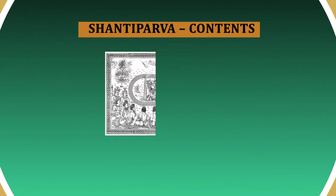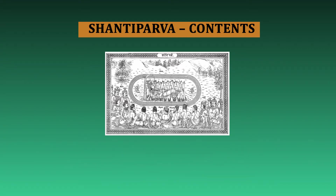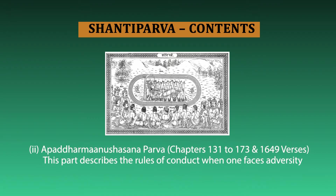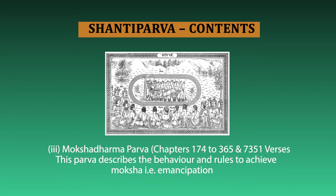The Shanti Parva is divided into three sub-parvas. The first one is called Raja Dharma Anushashana Parva, which deals with statecraft and governance. The second sub-parva is the Apada Dharma Anushashana Parva, which deals with duties of the king during times of adversity. The third sub-parva is the Moksha Dharma Parva, which deals with emancipation and salvation.